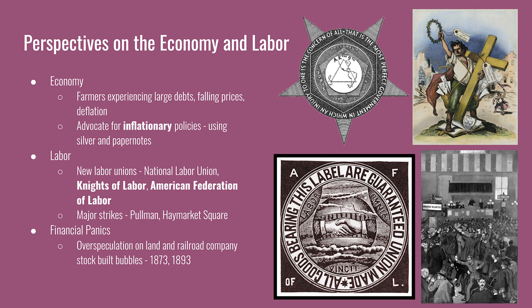Deflation meant that the value of the dollar was higher because there was less of it in the economy. Farmers therefore advocated for an inflationary policy, meaning they wanted more money put into the money supply so the value would go down, making it easier to pay back debts. They proposed doing this by coining silver in addition to gold and using paper notes or greenbacks not backed by gold or silver. Greenbacks had been used in the Civil War, but once the war ended the U.S. shifted away from their use.